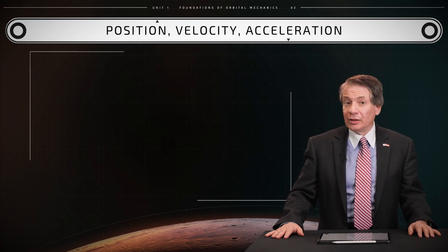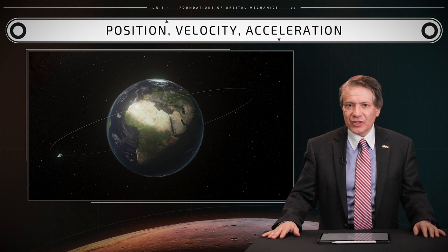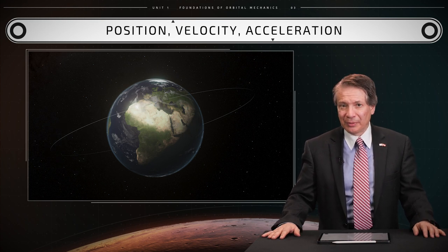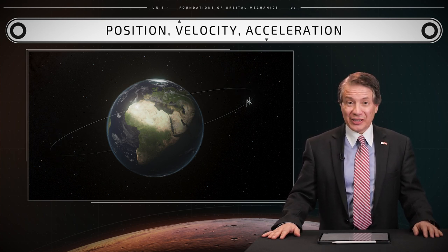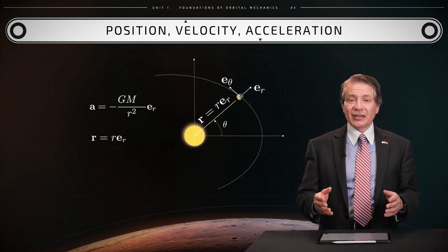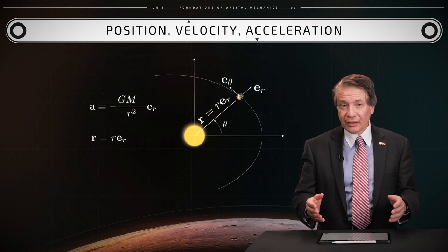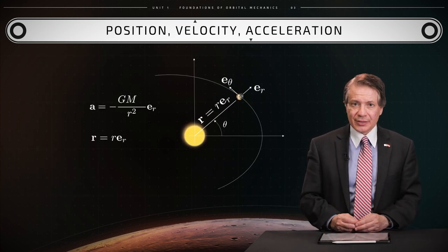This acceleration is based on the position r of the orbiting celestial body with respect to the reference celestial body that generates the GM gravitational field. The orbiting celestial body may be a spacecraft, a moon, or a planet. The reference celestial body may be the Sun, Earth, or any other planet.